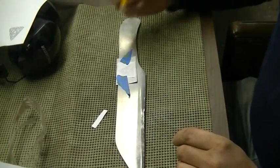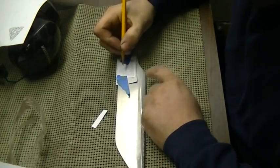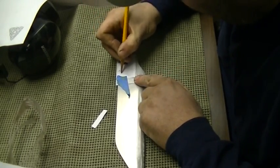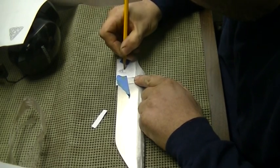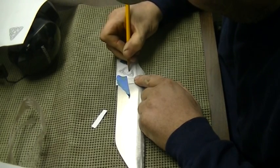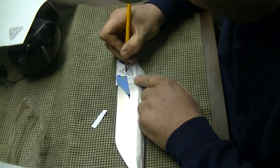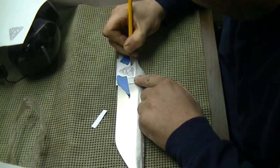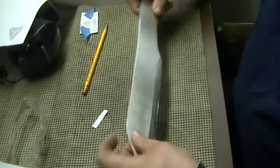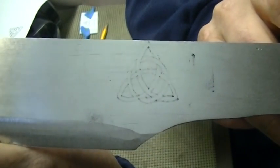There it is. And all I'm going to do is trace this pattern on the blade. And I don't know how well you can see that, but the image is now transferred to the pewter. Now I'll engrave it.